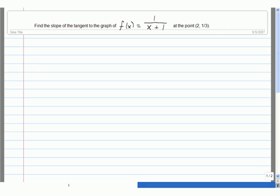By definition, the slope of the tangent, which we denote by m(2), is equal to the limit as h approaches 0 of [f(2+h) - f(2)]/h.